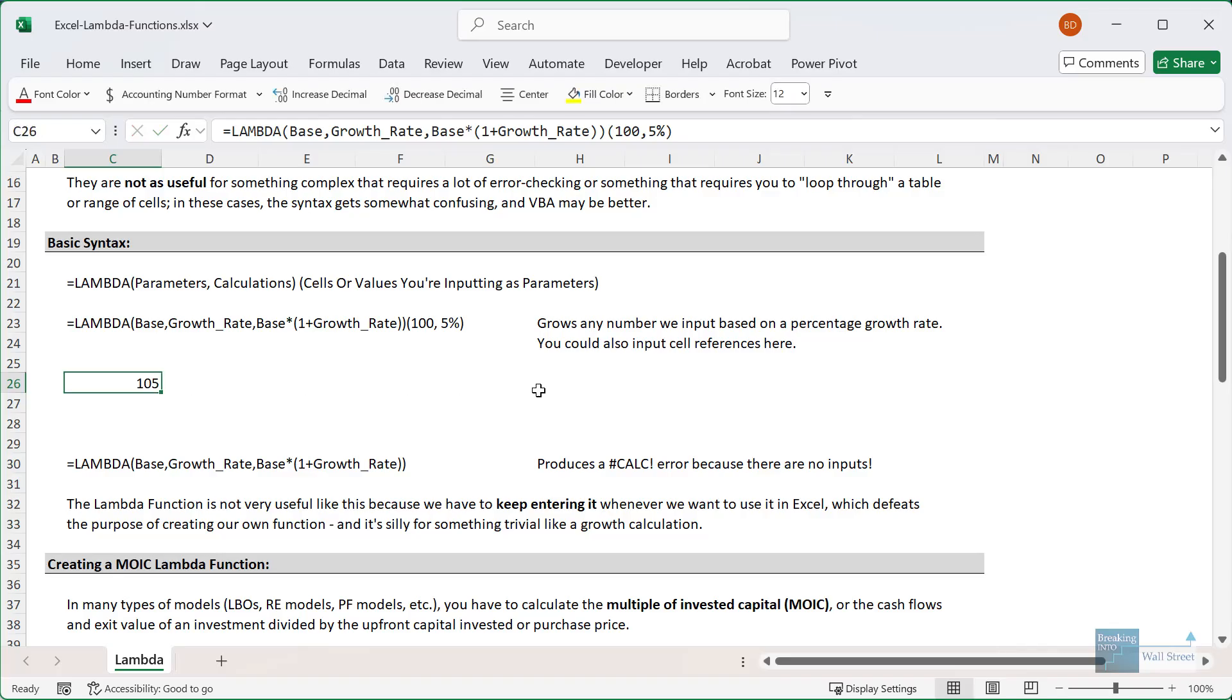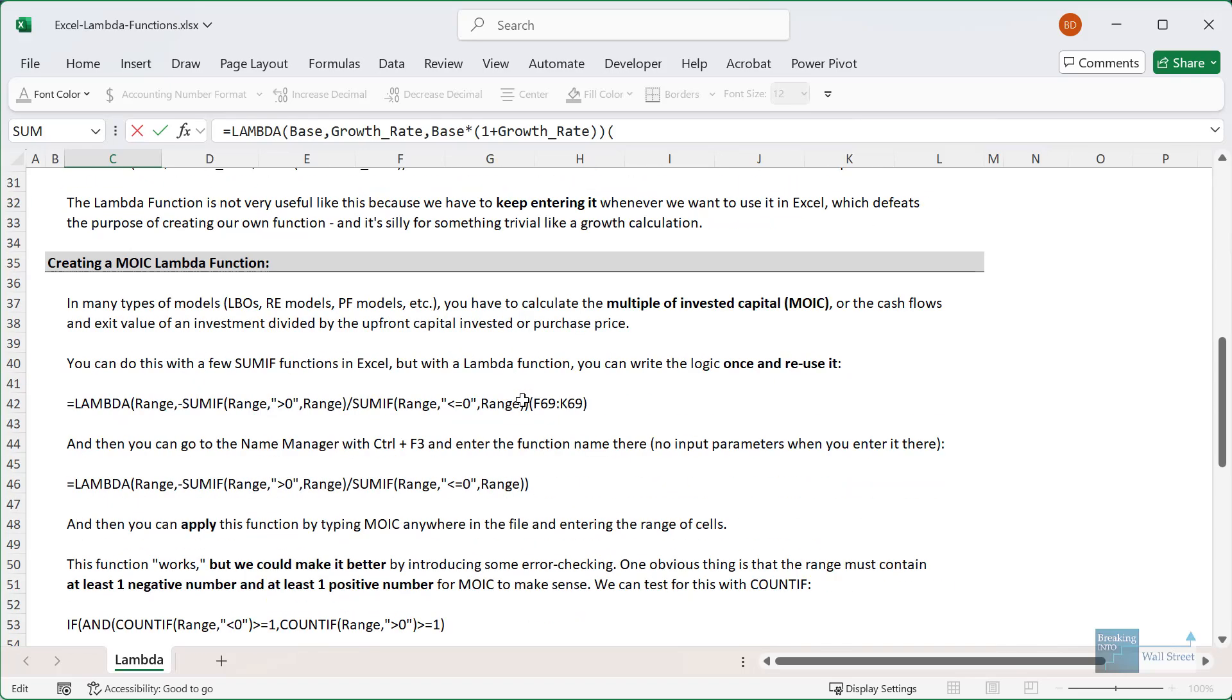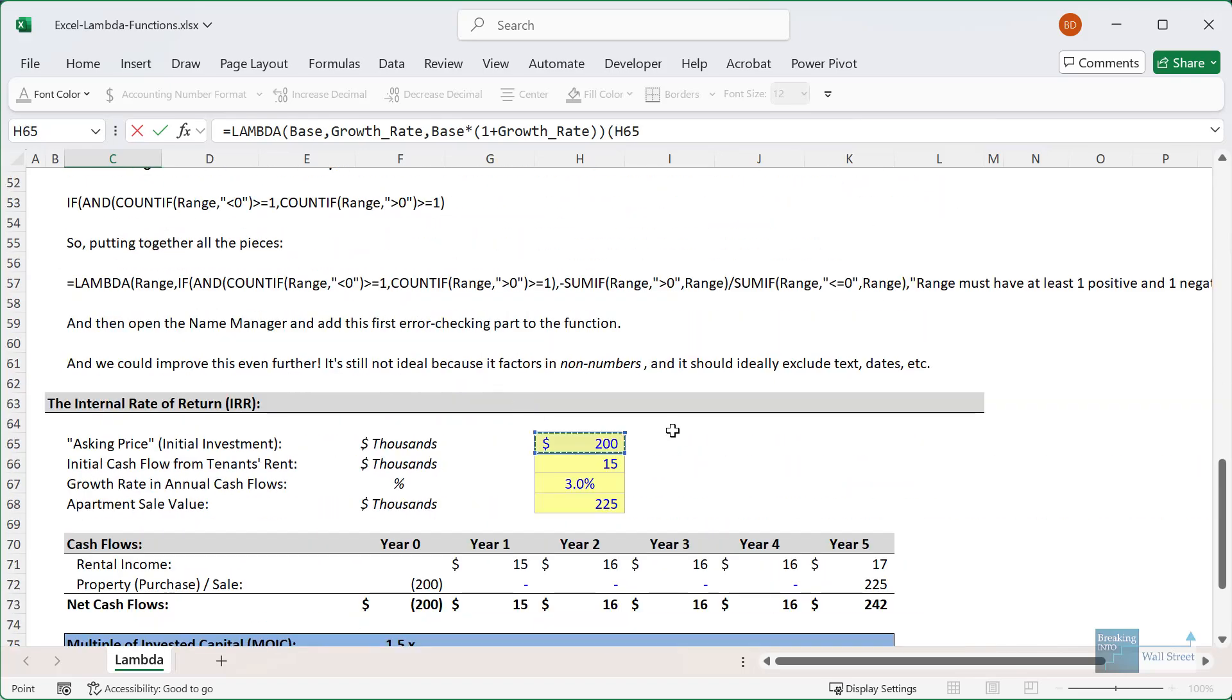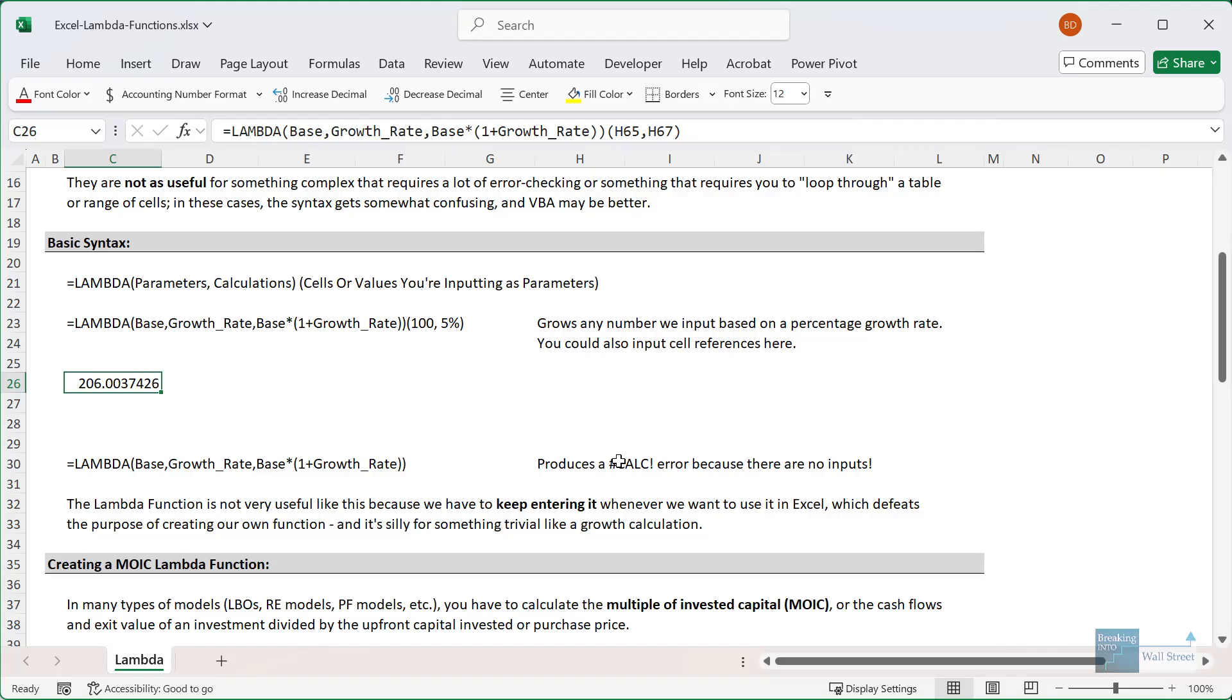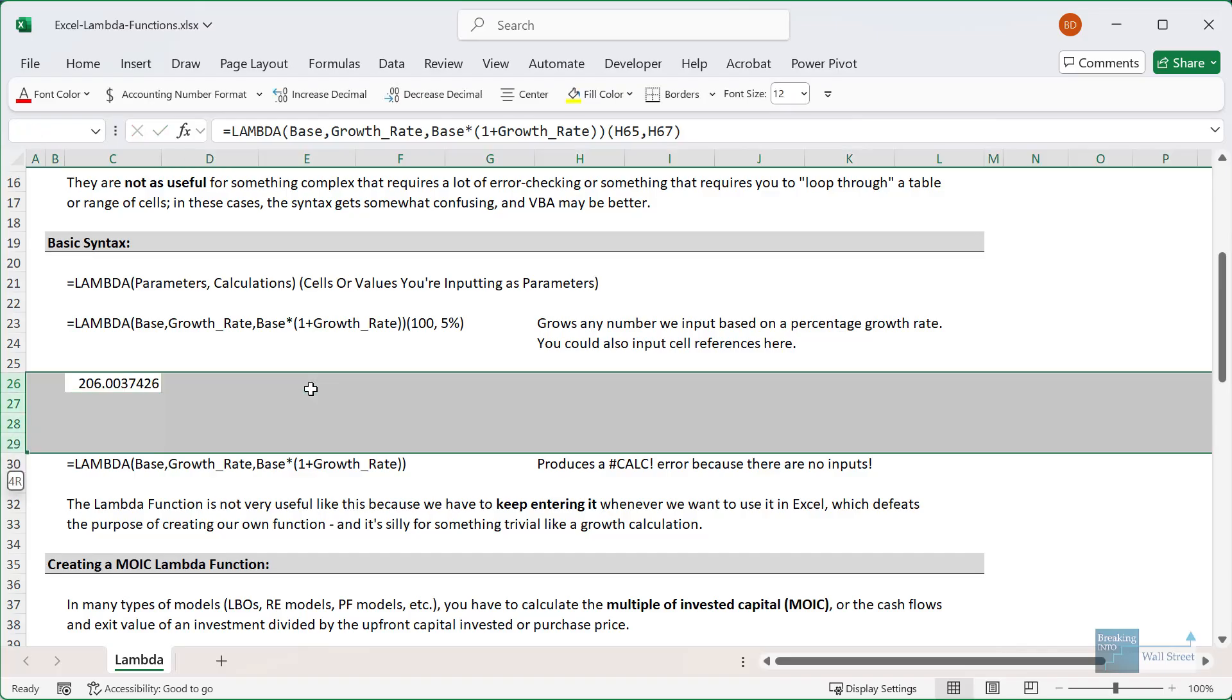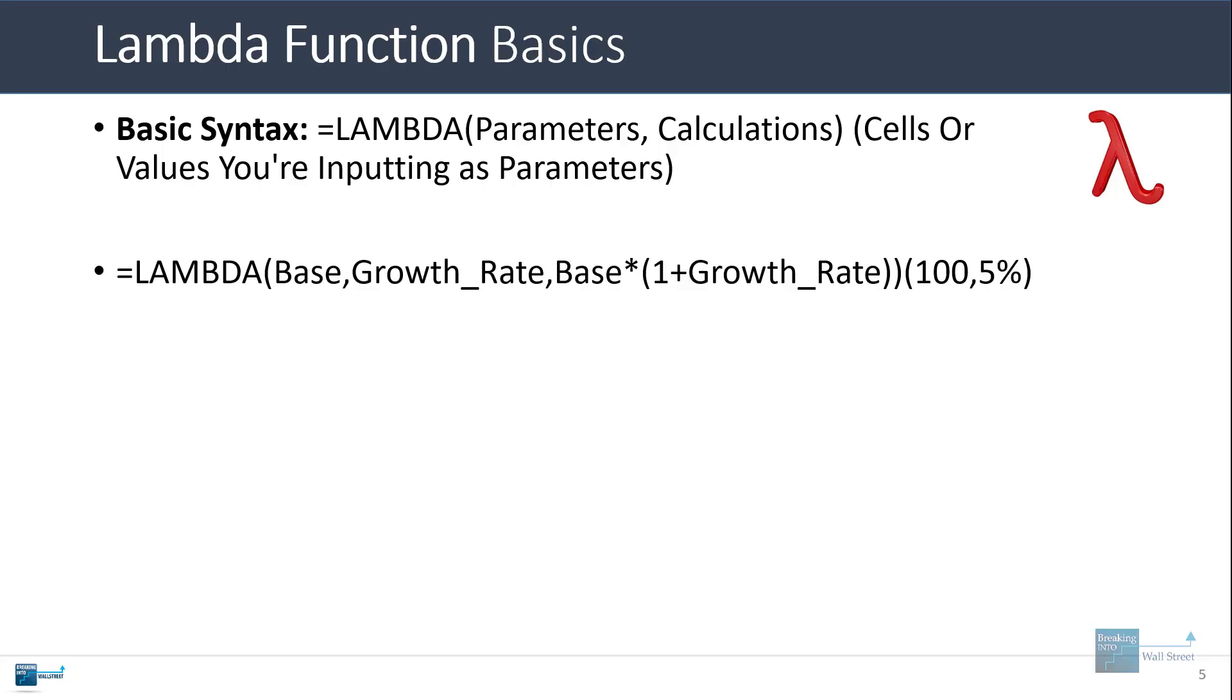Now if I were to go in and not enter those parameters, I would simply get a calculation error because Excel doesn't know how to interpret that it doesn't have any inputs. Now in addition to this, I could also enter cell references. So I could go down, and I could link to 200 down here and the 3%. And this will grow the 200 at 3%. And that's perfectly fine as well, you can link to cells, you can include hard coded values, or really whatever you want, as long as it matches the function that you're trying to execute right here. So those are the very basics of lambda function syntax.